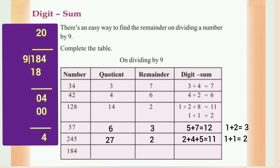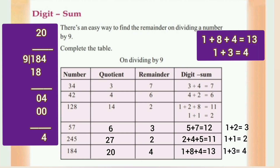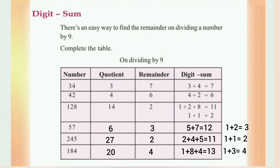184 divided by 9: 18 minus 18 is 0, quotient is 20, remainder is 4. The digit sum: 1 plus 8 plus 4 equals 13. Then 1 plus 3 equals 4. The remainder is 4 and the digit sum is also 4. So the digit sum of the number will be equal to the remainder when dividing by 9.